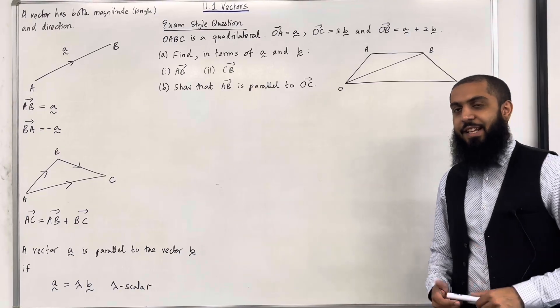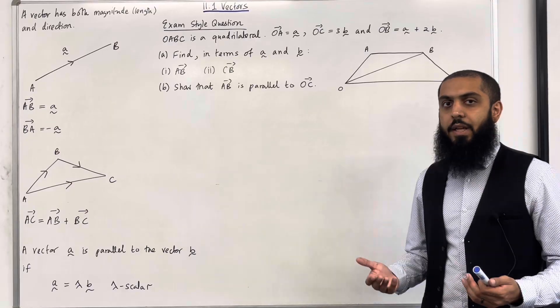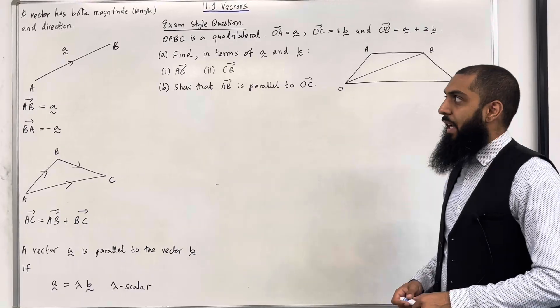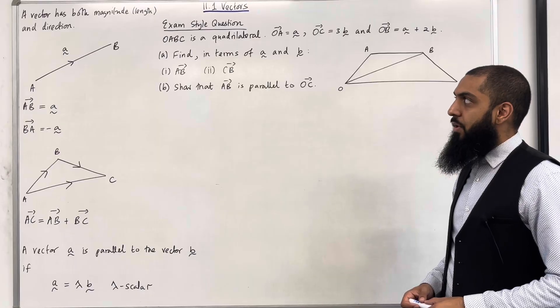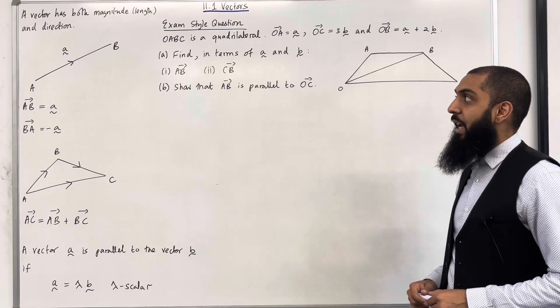Let's have a look at the key facts of this section. Firstly, what is the definition of a vector? Ladies and gentlemen, a vector has both magnitude, which is a length, and it also has a direction.